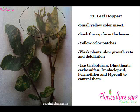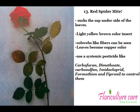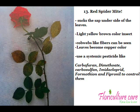Red Spider Mite is a very small insect that sucks sap from the underside of leaves. It is a light yellow-brown color insect, and cobweb-like fibers can be seen on the underside of the leaves. When the insect sucks the sap, the leaves become copper colored. Damage is more severe in warm conditions. Use a systemic pesticide like Carbofuran, Dimethyloid, Carbosulfan, Imidacloprid, Formethan, and Fipronil to control them.